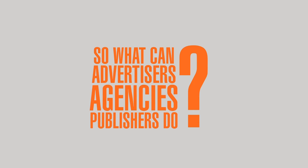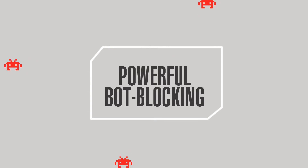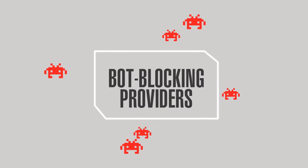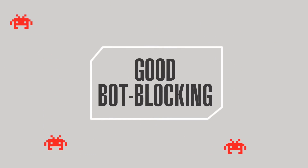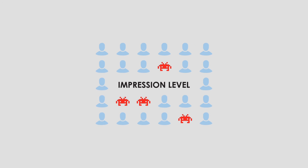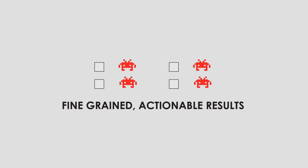So what can advertisers, agencies, and publishers do? Partner with an ad platform with powerful bot blocking in place, or with the bot blocking providers themselves. A good solution will have a few key elements: the technology should be always on, blocking bots as soon as they appear. It should carve out bots on an impression level, rather than eliminating large amounts of inventory at once. And it should give you fine-grained, actionable results, rather than just telling you something looks suspicious.